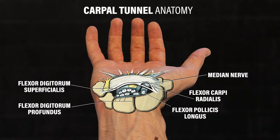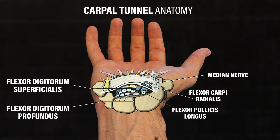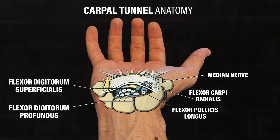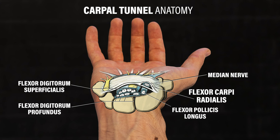Let's start with some basic background information and anatomy. The carpal tunnel is a narrow passageway located on the palmar side of your hand and wrist, formed by the transverse carpal ligament on one side and the carpal bones on the other. Within this passageway runs the median nerve and multiple flexor tendons, including the flexor digitorum superficialis and profundus, the flexor pollicis longus, and the flexor carpi radialis.